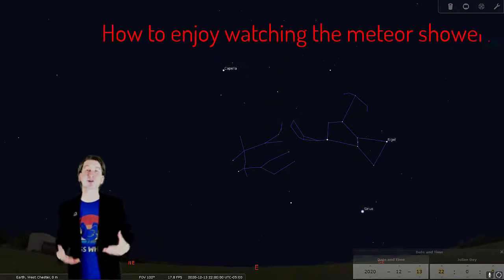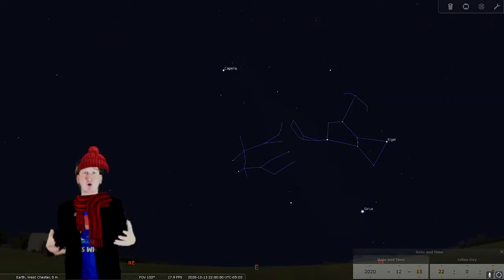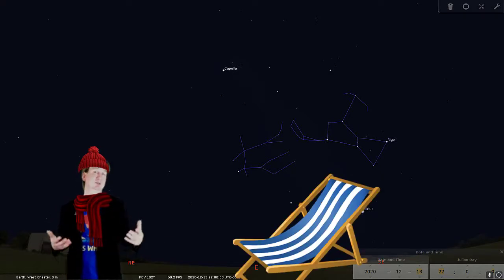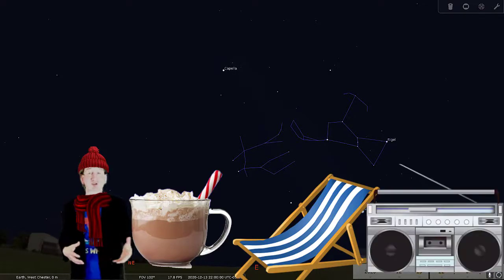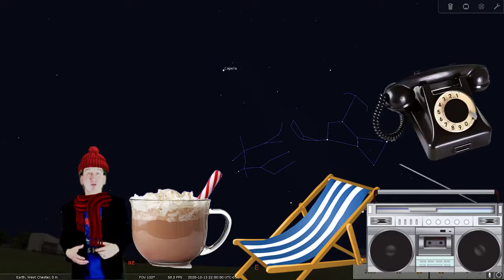So how should I prepare to be comfortable watching it? Be sure to dress warm and bring a warm blanket because it is December and you will be outside at night. Use an outdoor lounge chair to lay back so you can comfortably look about halfway up in the sky in the direction of the constellation Gemini. Make some hot chocolate or other warm drink to keep you nice and toasty. While patiently waiting for meteors, you may want to listen to some music or a podcast, have a conversation with a friend, or just enjoy the silence.